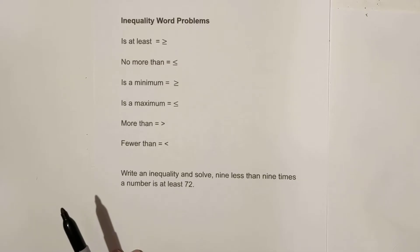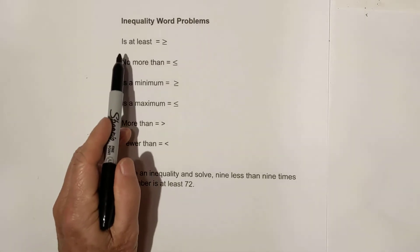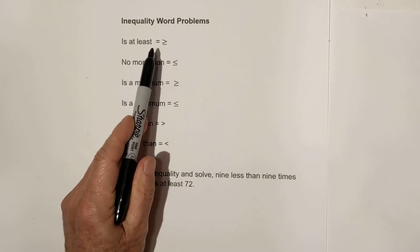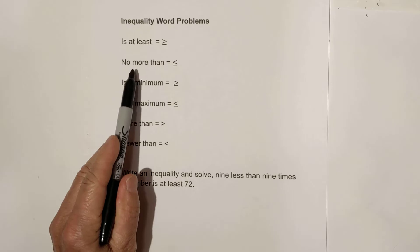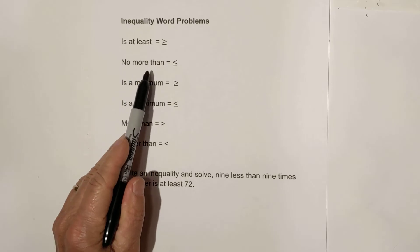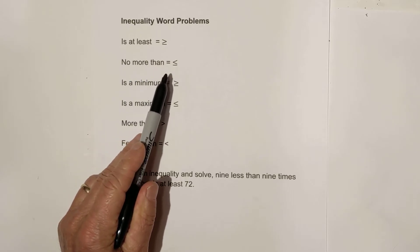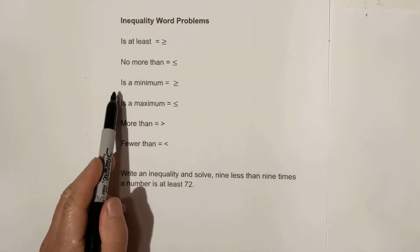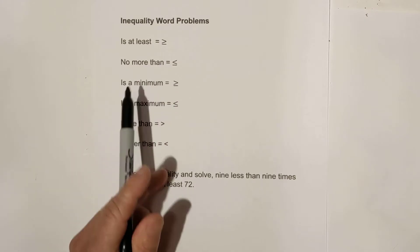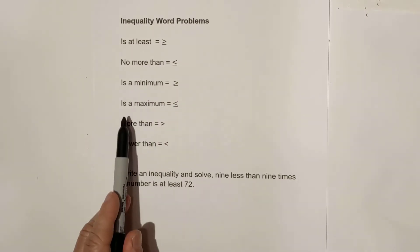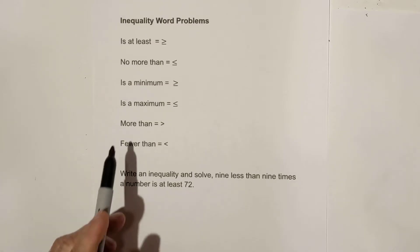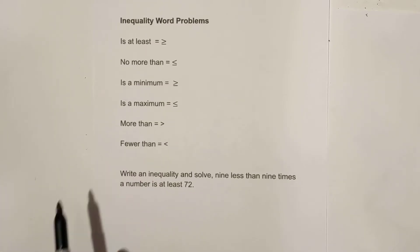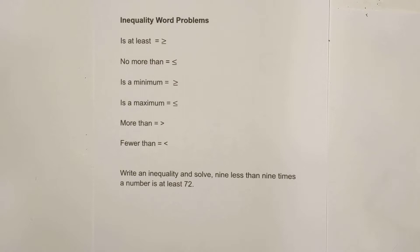Before you get started, here are a couple of expressions that will really help you. If you see 'is at least,' you're going to use greater than or equal to. 'No more than' is less than or equal to. 'Is a minimum' is greater than or equal to. 'Is a maximum' is less than or equal to. 'More than' is greater than, and 'fewer than' is less than.